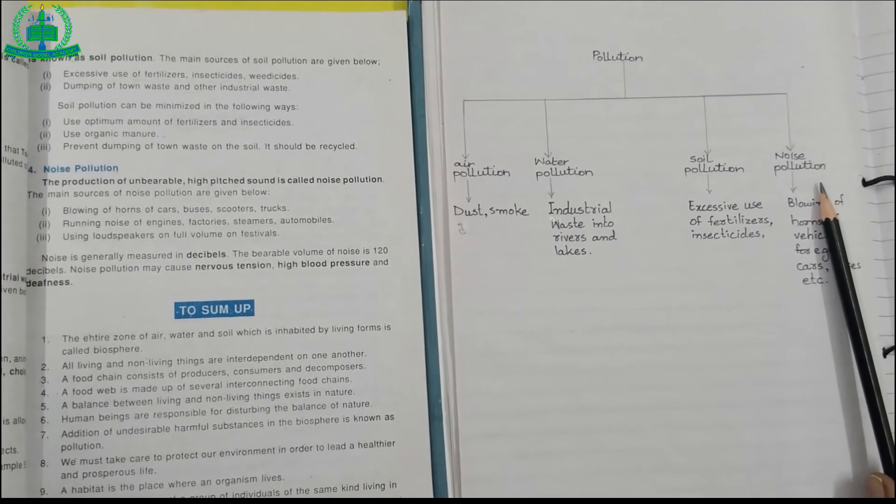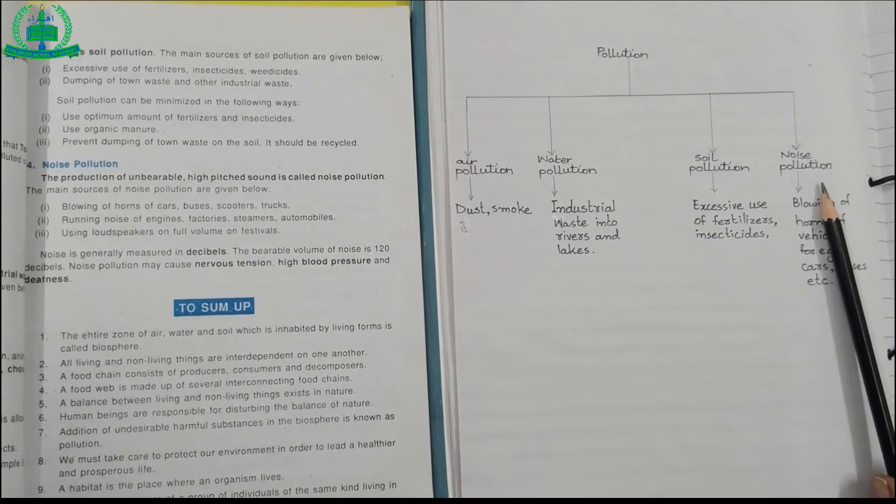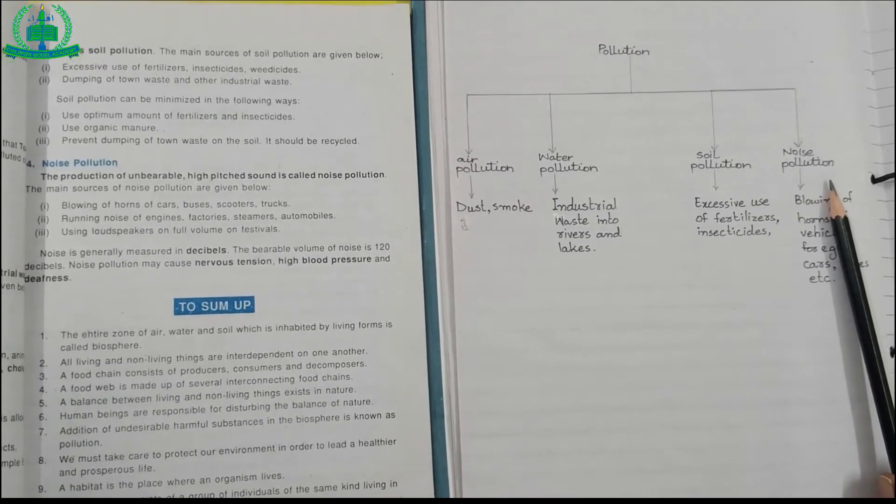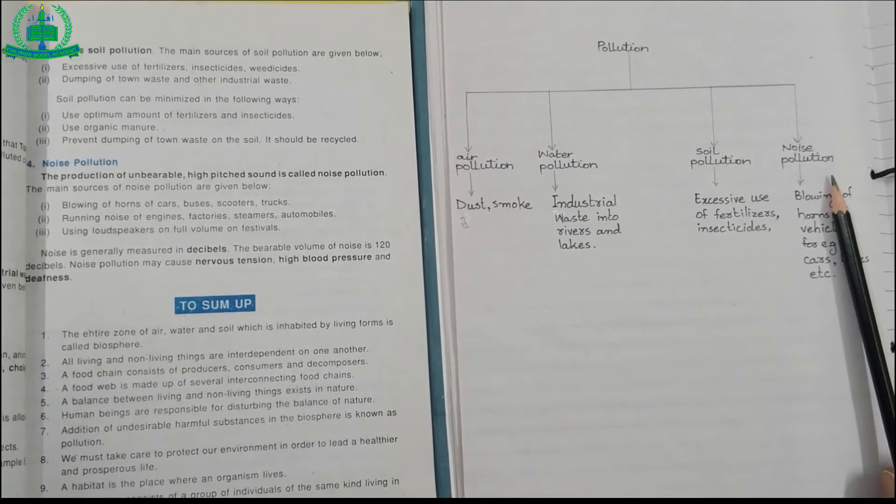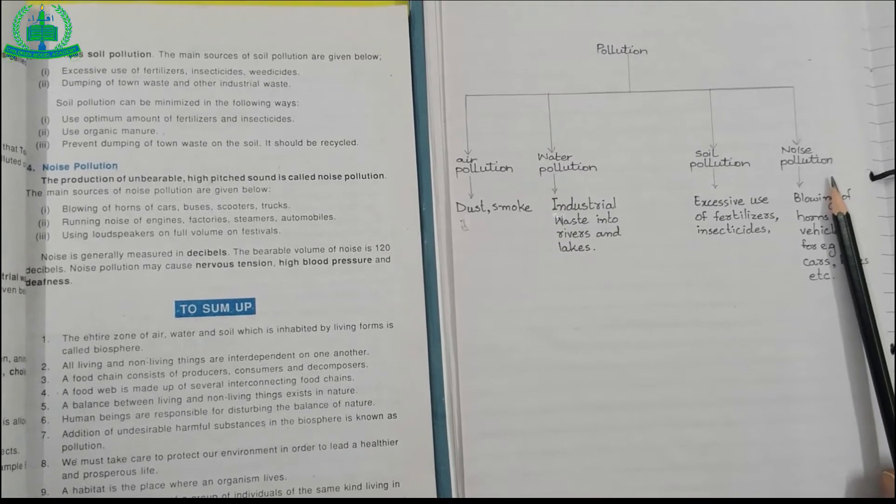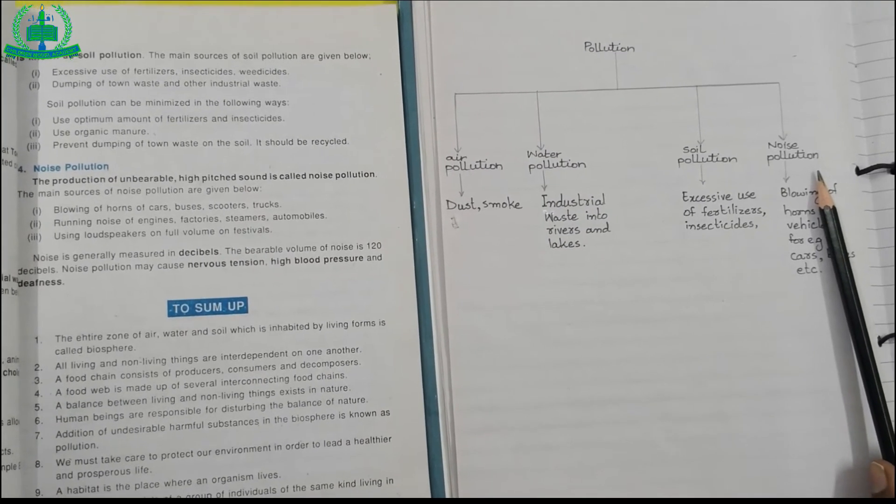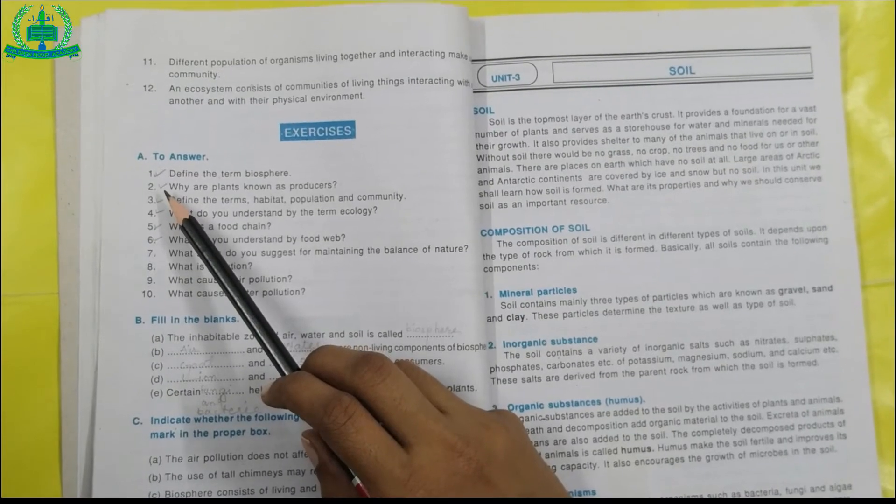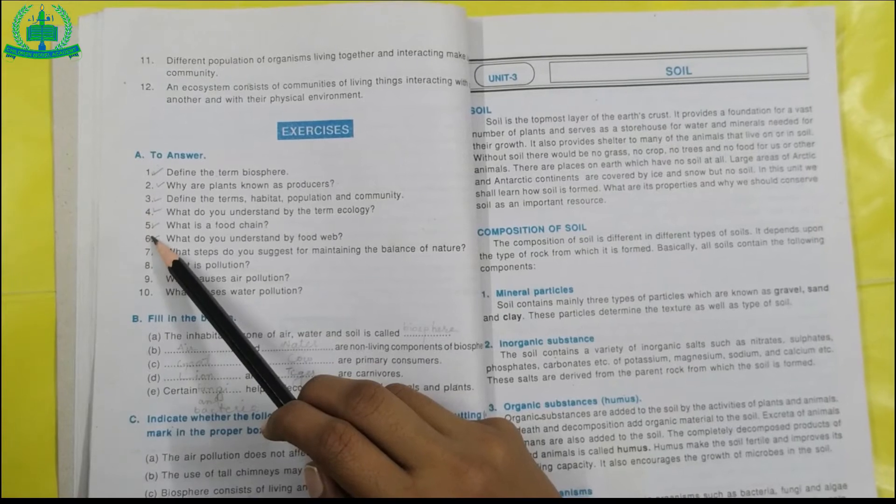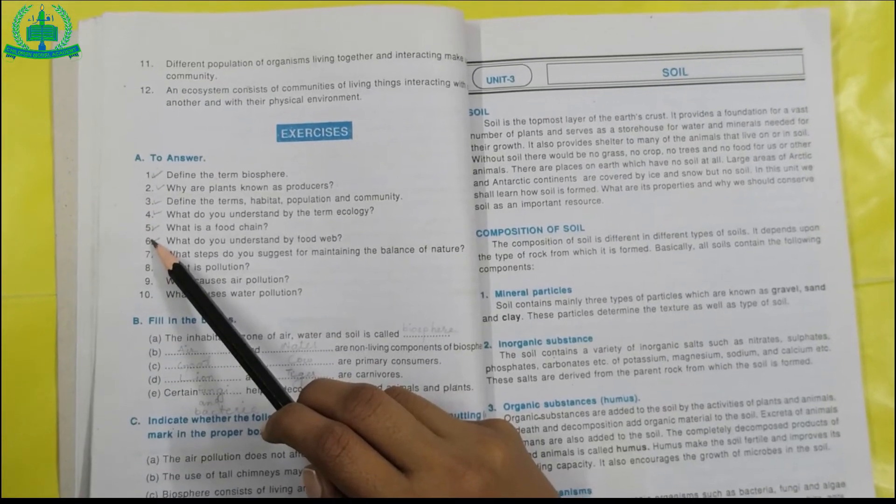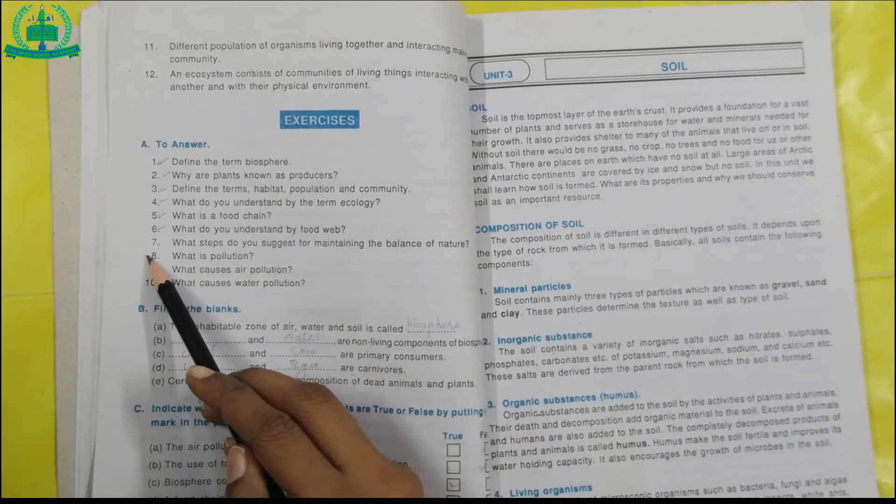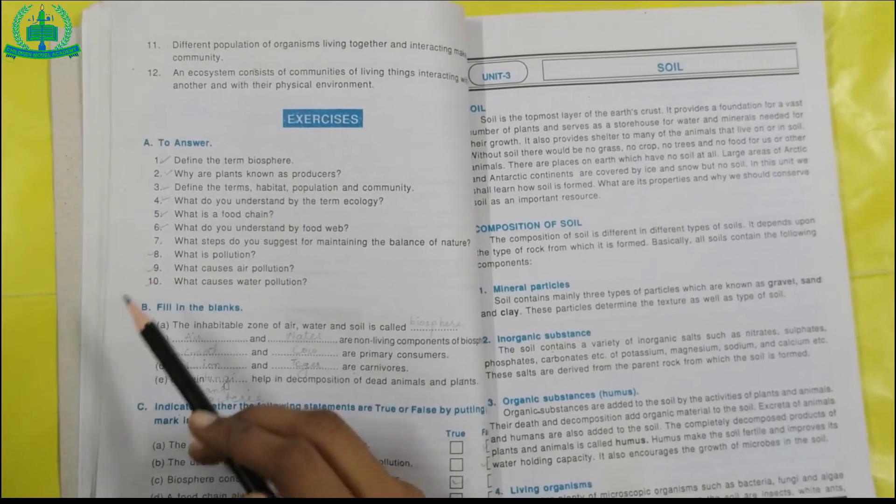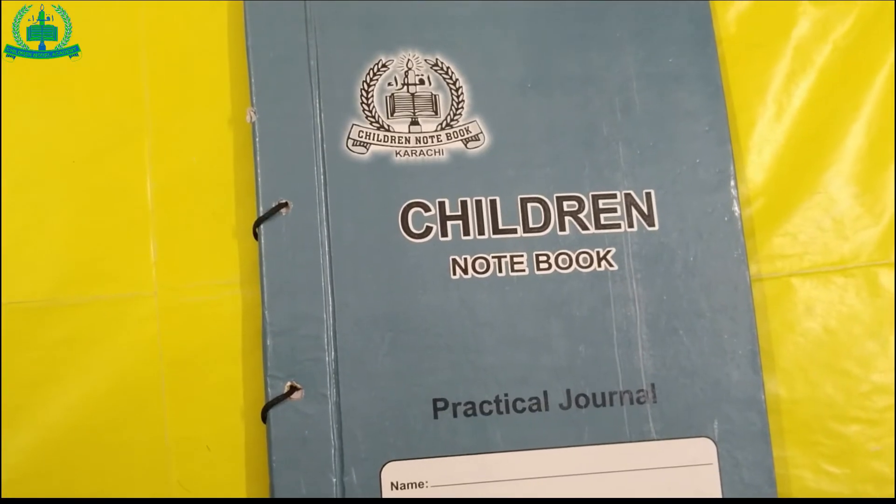Noise pollution is the production of unbearable high-pitched sound. For example, blowing of horns of cars, running noise of engines, using loudspeakers or water on full volume on festivals. We have already done question number one to question number six in the previous lecture. Now we are starting question number eight, nine, ten.